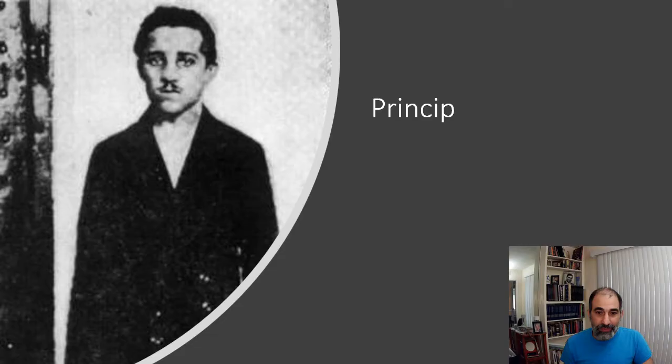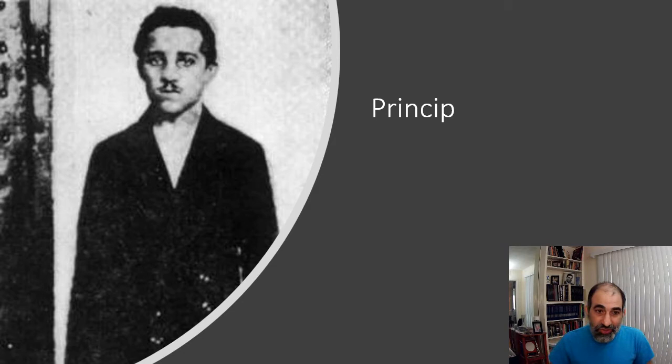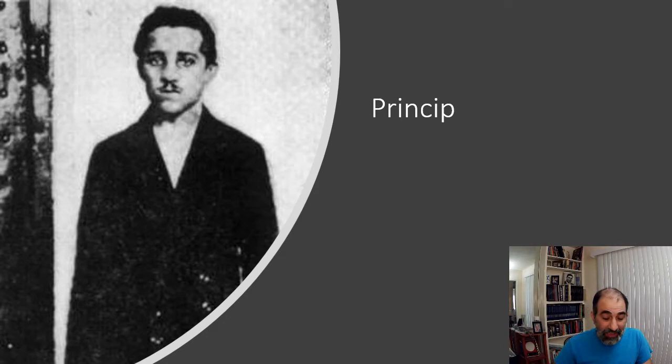So here is Gavrilo Princip. He's just 18 or 19 years old, and he is the one who assassinates Archduke Franz Ferdinand along with his wife. He's going to be captured when he does this and put on trial. They didn't give him the death penalty — he actually tried to take cyanide to kill himself, but that didn't work. Eventually he'll die of tuberculosis in prison.